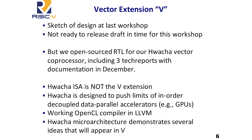On the vector extension V — we sketched out the design at the last workshop but haven't had time to release a draft. To compensate, we open-sourced the Hwacha vector coprocessor, Berkeley's vector unit at version four of the architecture, along with three tech reports. One important clarification: the Hwacha ISA is not meant to be a proposal for the V extension. Hwacha was a research project exploring a decoupled data-parallel accelerator, more appropriate to replace something like a GPU. However, the Hwacha microarchitecture includes many of the microarchitectural widgets you'll need to implement the V extension.